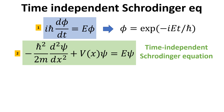The first equation is easy to solve, and the general solution for phi is simply an exponential function as shown. The second equation, highlighted in green, is also known as the time-independent Schrödinger equation. At this point, we will not be able to solve this equation unless the potential V is specified. Nevertheless, we can make some general statements about the solutions to the time-dependent Schrödinger equation.